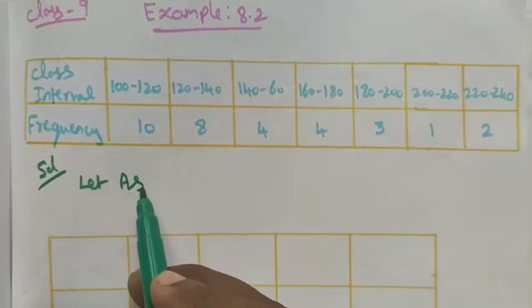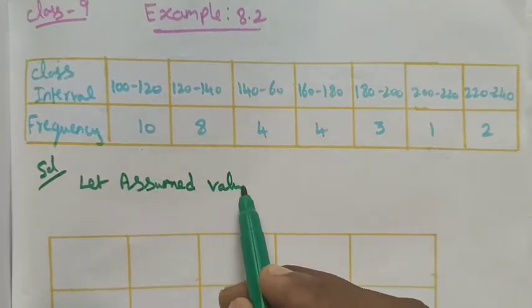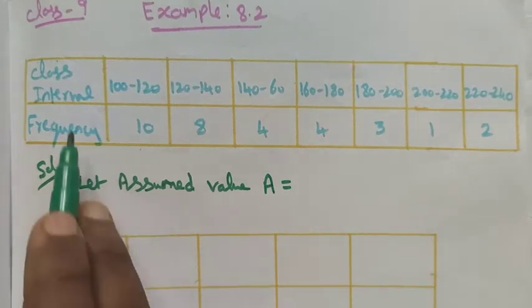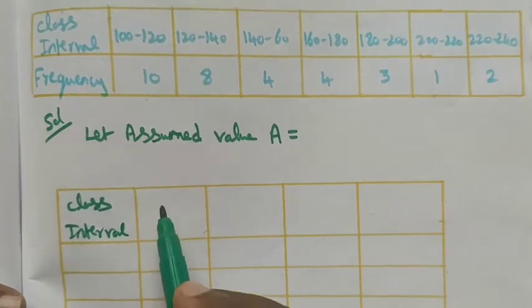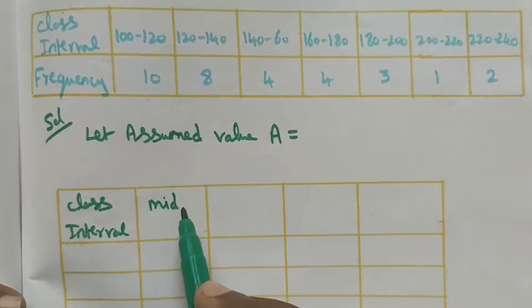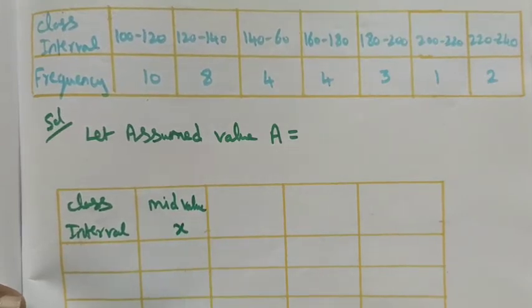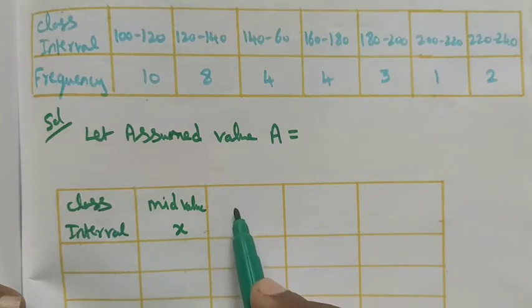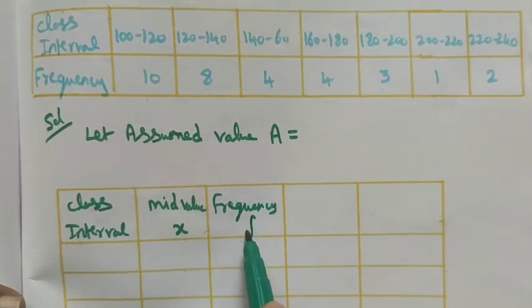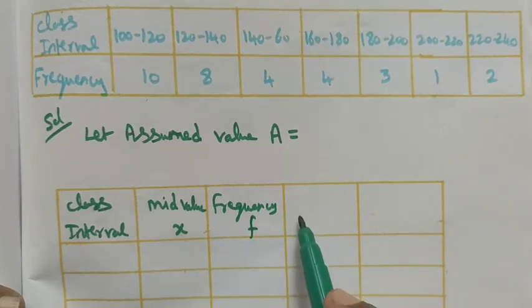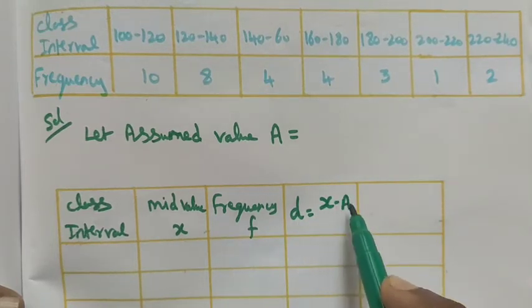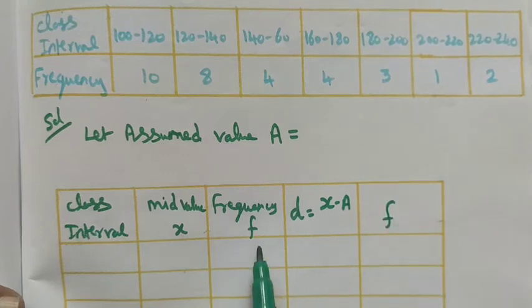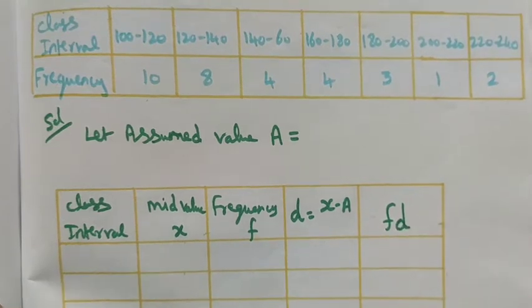Let the assumed value be 'a'. The table has columns for class interval, mid-value x, frequency f, and deviation d where d = x - a. Finally we multiply frequency and deviation to get fd, because we are using the assumed mean method.